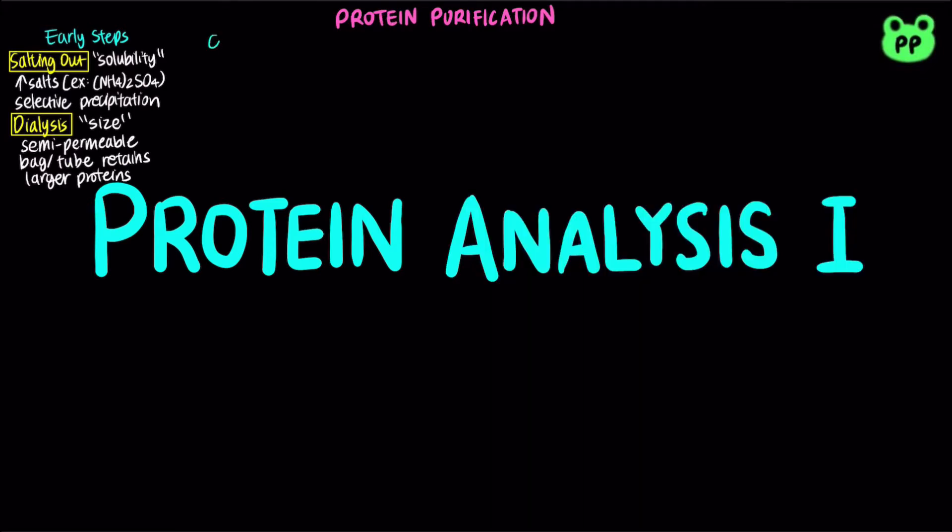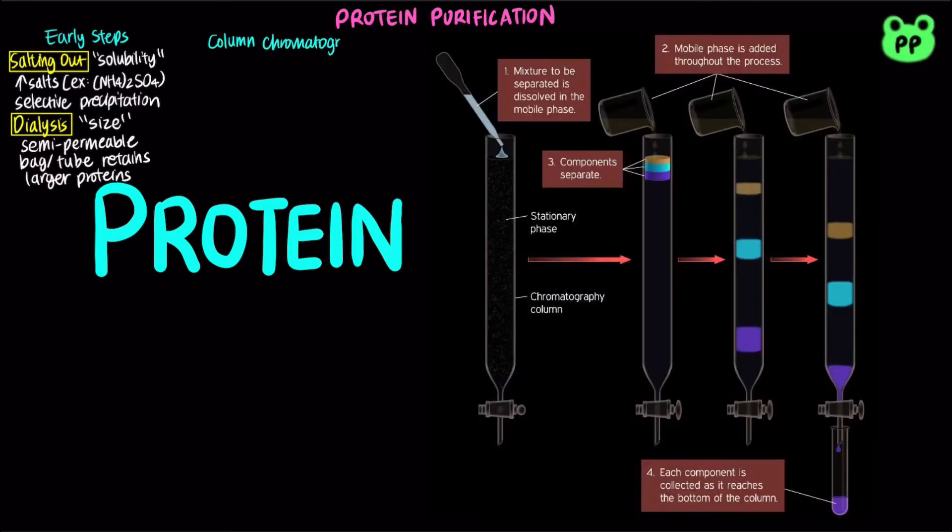The most powerful methods of protein purification include column chromatography, in which a porous solid column with appropriate chemical properties serves as the stationary phase and a buffer solution serves as the mobile phase migrates through it.